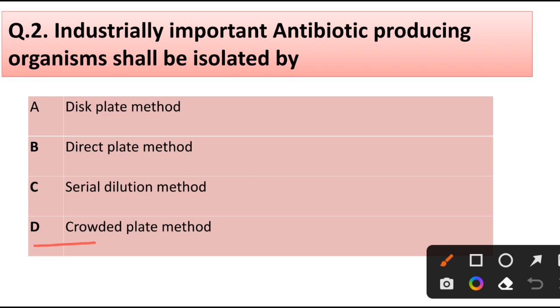Question number 2. Industrially important antibiotic producing organism shall be isolated by: digs plate method, direct plate method, cereal dilution method, or crowded plate method. Correct answer is option D, crowded plate method.